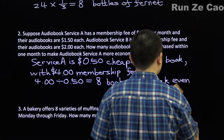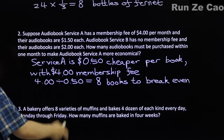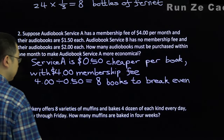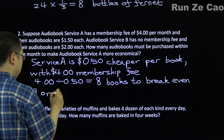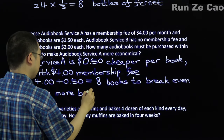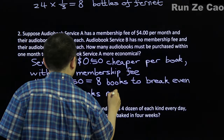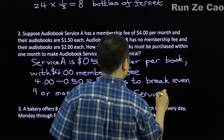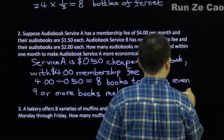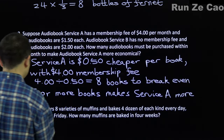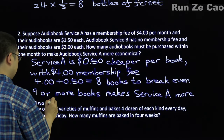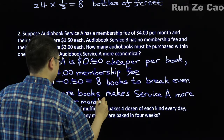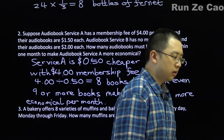At 8 books, the extra amount you pay for membership is exactly compensated by the cheaper price per book. So 9 or more books per month makes Service A more economical.